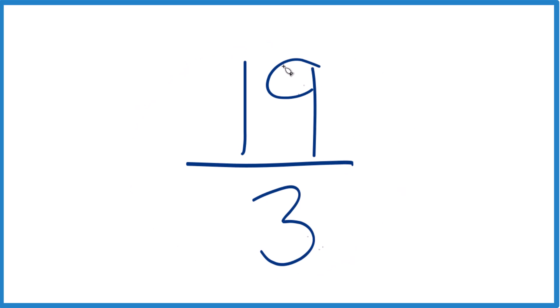So to simplify 19 over 3 here, what we need to do is find a common factor. That's a whole number that goes evenly into 19 and 3.